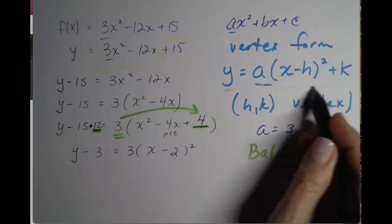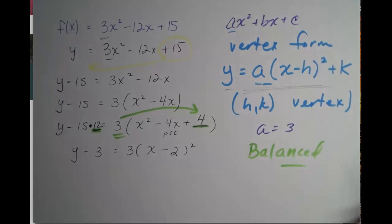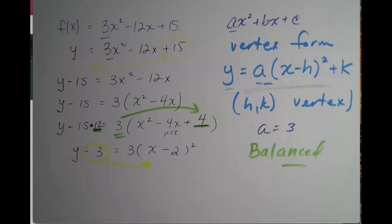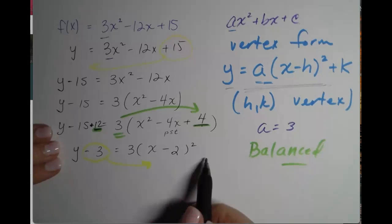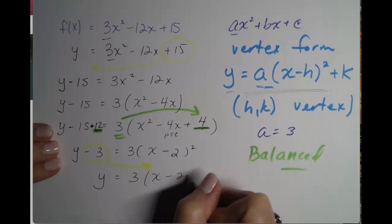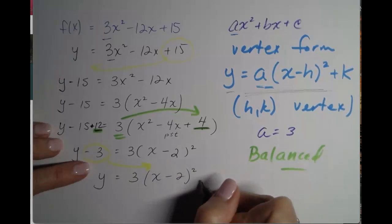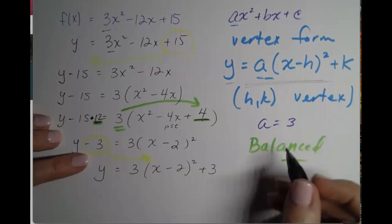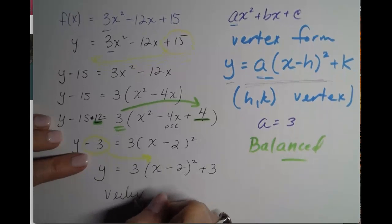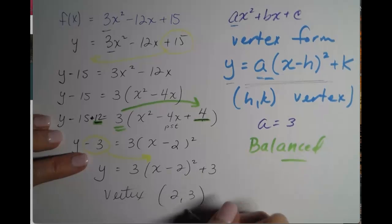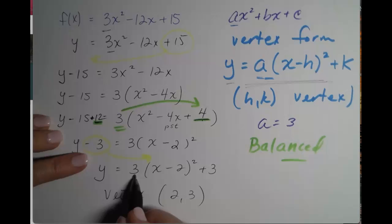Now, we want one last step to get us to that vertex form. That one last step is to now move that constant back. So negative on the left, positive on the right, y equals 3 times x minus 2 squared plus 3. So now we can clearly see that our vertex is going to be at 2, 3, and you see our a value is still 3.